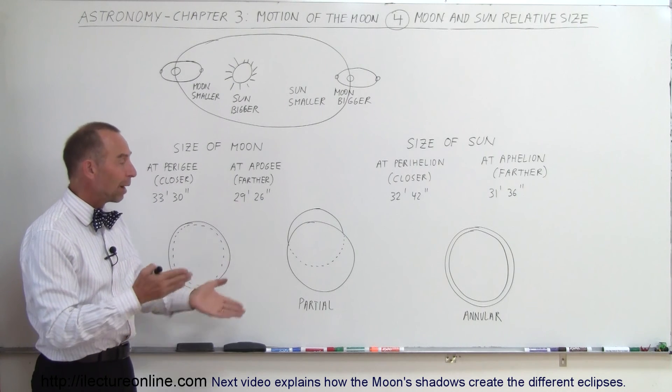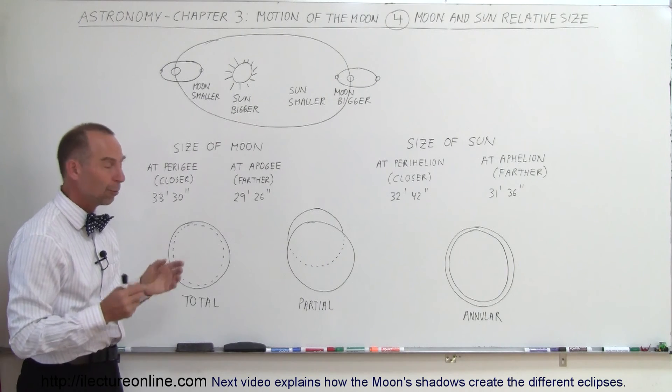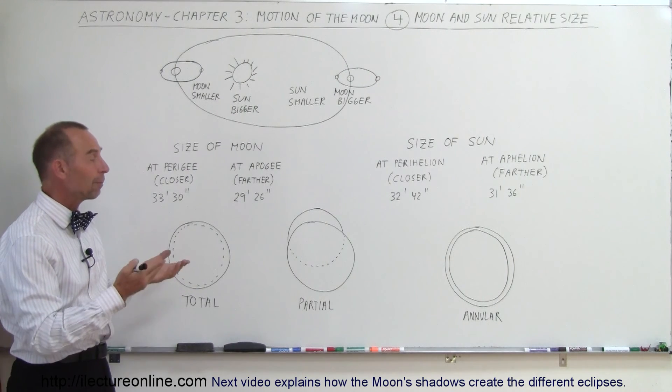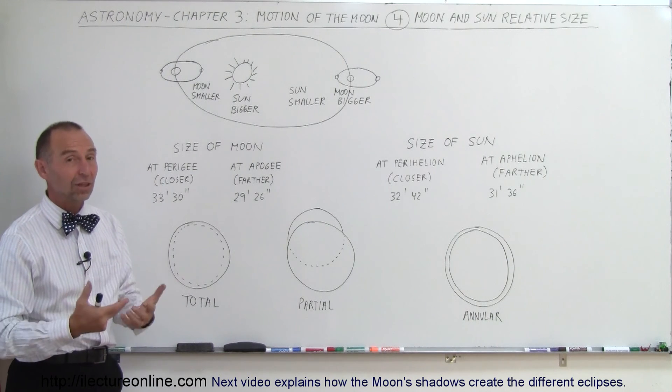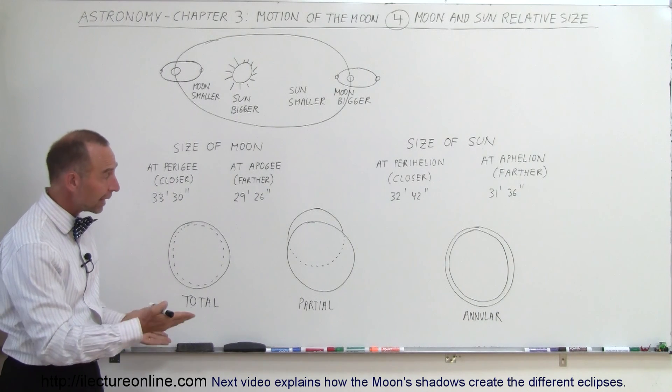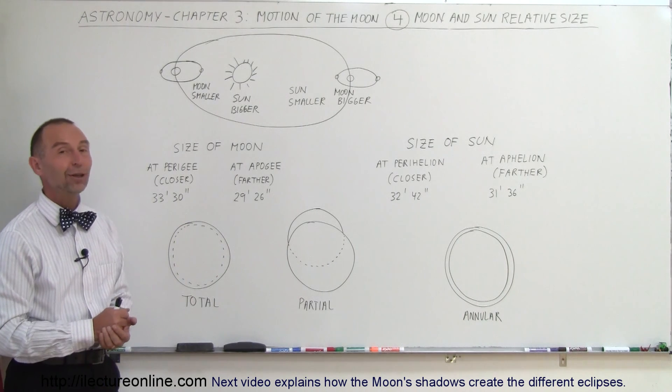Most of the time, we would probably have a partial eclipse if the lineup is not just perfect. For most of the places on the Earth, you'll see a partial eclipse, only for small little regions each time do you have the opportunity to see a total eclipse, and that is why sometimes we see annular eclipses and sometimes we see total eclipses.